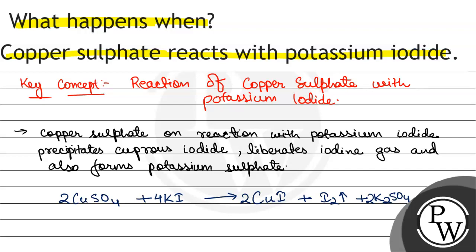This is the balanced equation of this reaction. Copper sulphate on reaction with potassium iodide: cuprous iodide precipitate ho jata hai ga, iodine gas evolve ho ga, and potassium sulphate bhi bane ga.